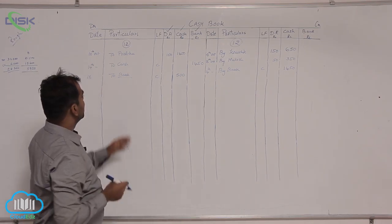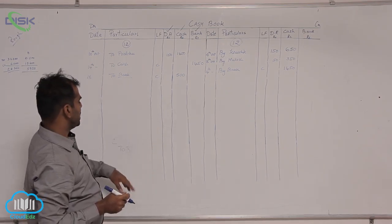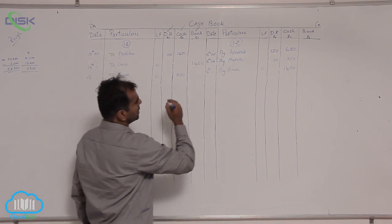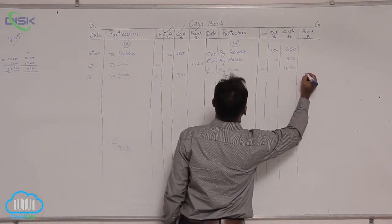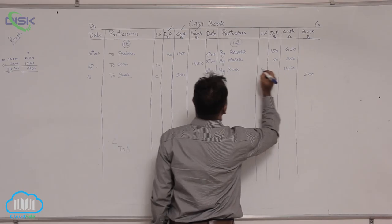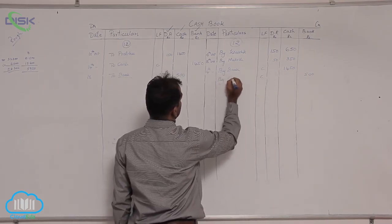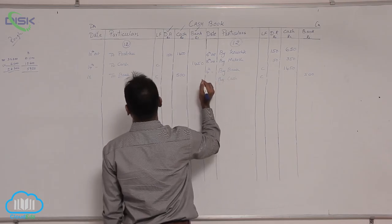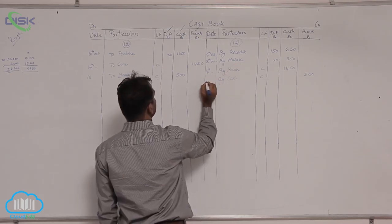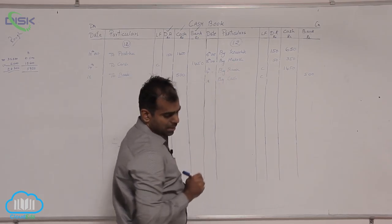Now, next enter this amount on the other side, so bank has to be credited, go to the credit side, enter the amount in bank column 500, why bank is the giver of the cash, so state cash as the reason for crediting the bank and 18th is the date.